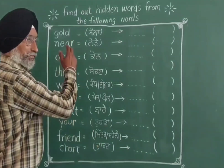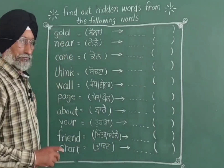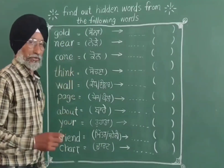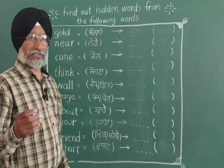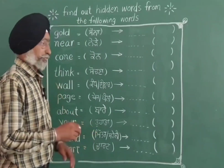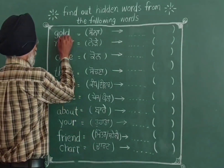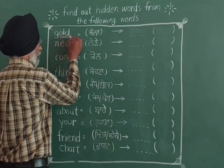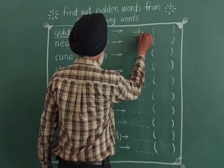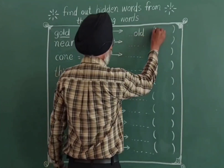The first word is GOLD. Gold means 'sona' (gold in Urdu). You can work it out in your mind. GOLD contains the hidden word OLD. Old means 'purana' (old in Urdu).